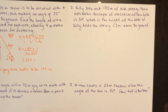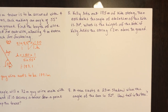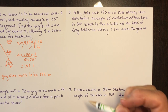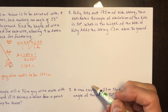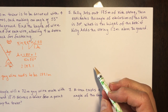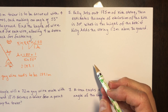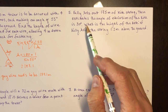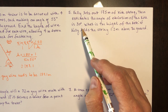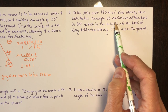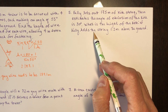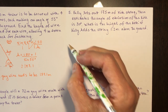Problem five — maybe stop here, work it out yourself, then come back. Kelly lets out 175 meters of kite string and estimates the angle of elevation of the kite is 30 degrees. What is the height of the kite if Kelly holds the string 1.2 meters above the ground?